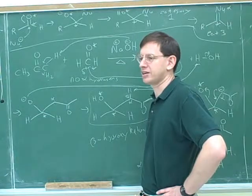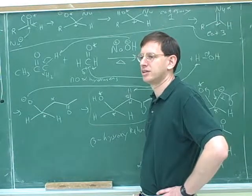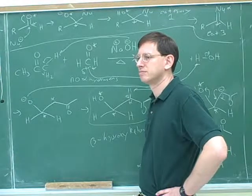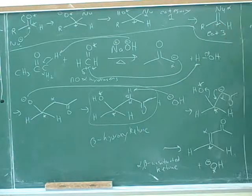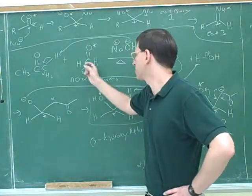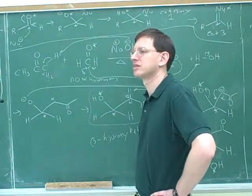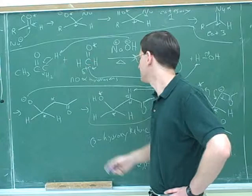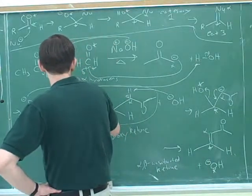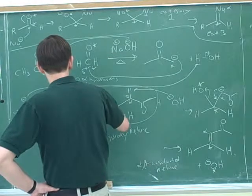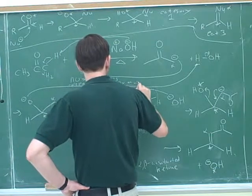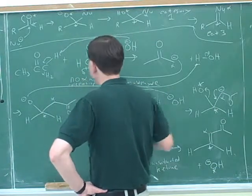How can we make this more electrophilic? The aldehyde will be more electrophilic than the ketone. Why is the aldehyde more electrophilic? Because there are no alkyl groups that are electron donating — it's just hydrogens. This doesn't have anything to stabilize the delta positive. So we want one molecule to have no alpha hydrogens and be more electrophilic, which usually means you want it to be an aldehyde.